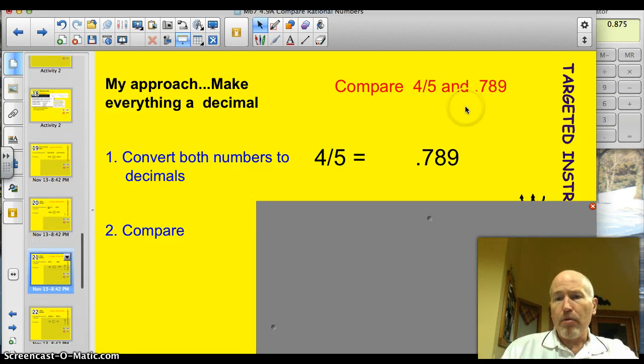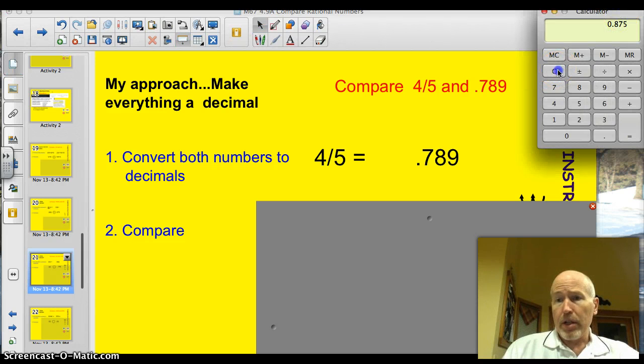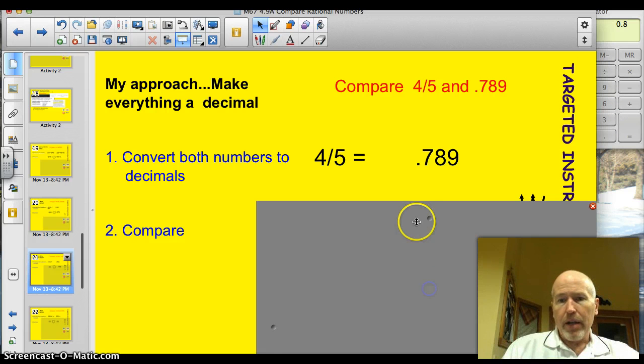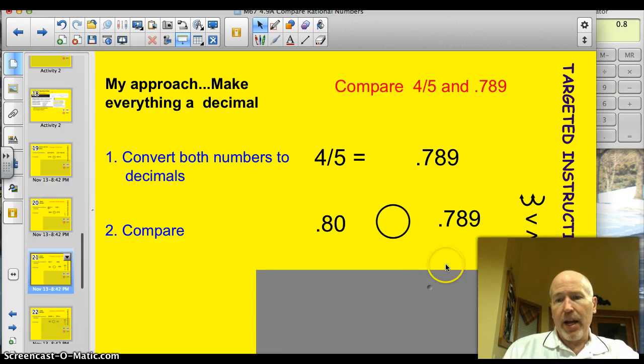Here's another one. Compare 4 fifths and 0.789. Well, we're lucky here. This one's already a decimal. So, we don't even have to convert that. So, we just have to convert 4 fifths. Just grab your calculator. Clear it out. 4 divided by 5. Bam! 0.8. All right. So, now, you've got 0.8 and 0.789. Which one's bigger? Pretty simple, right? You can do this.